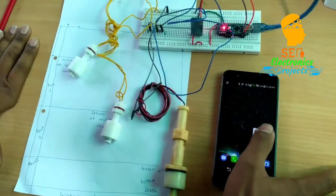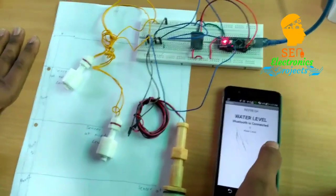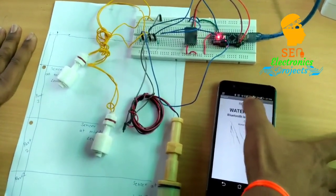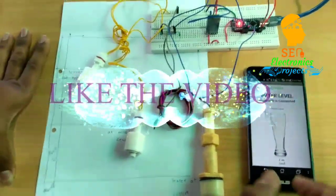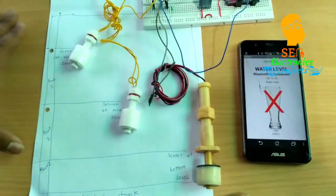Then again we connect with Bluetooth for getting the reading. We refresh it and we get the correct reading. Water level is low, now water level decreases to empty.